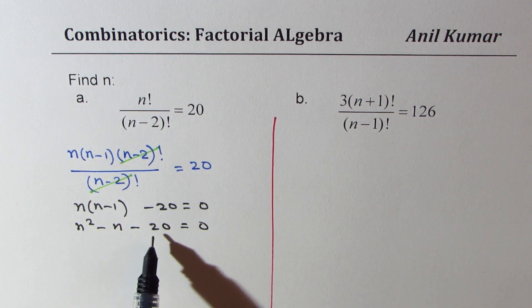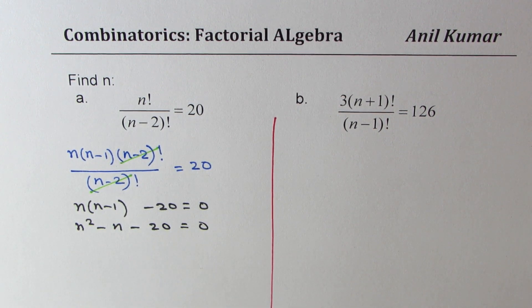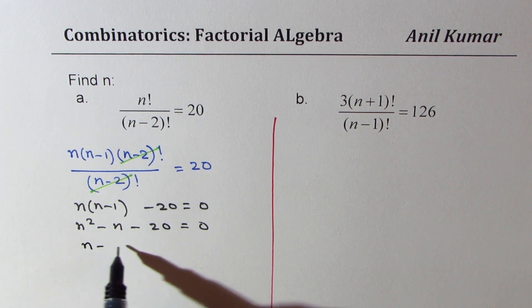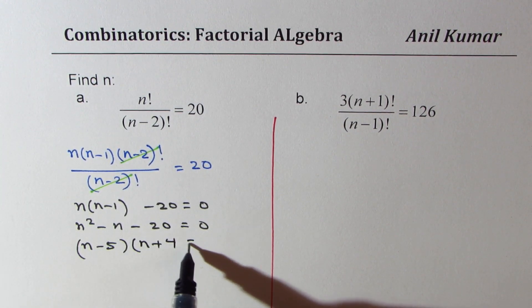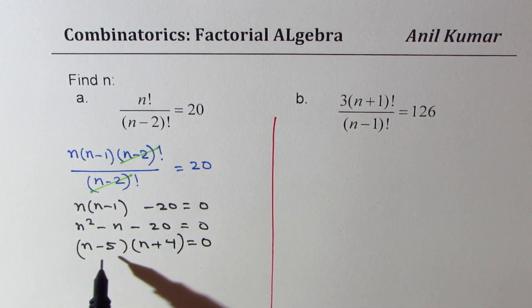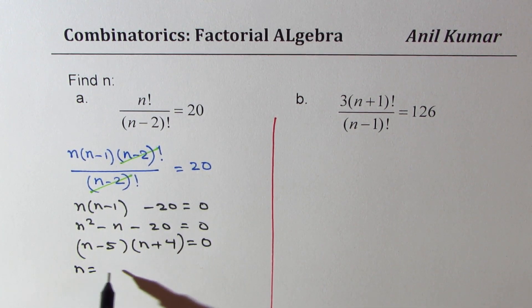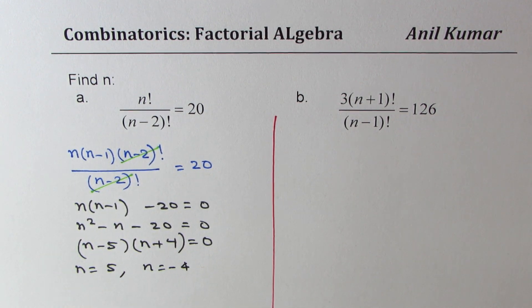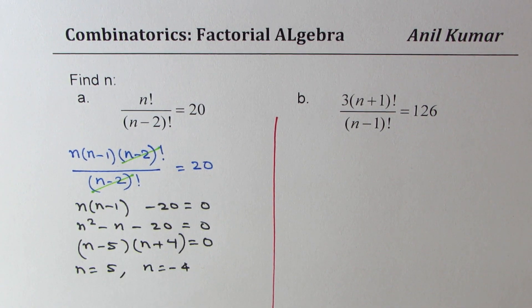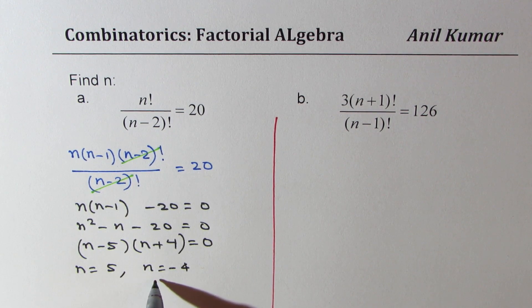5 and 4 can give us minus 20, the bigger number being 5. So I'll write this as (n-5) times (n+4) equals 0. We get two solutions: n equals 5 and n equals minus 4. When you get the solutions, you have to look into a couple of things. One is that n cannot be negative, so that is not valid.